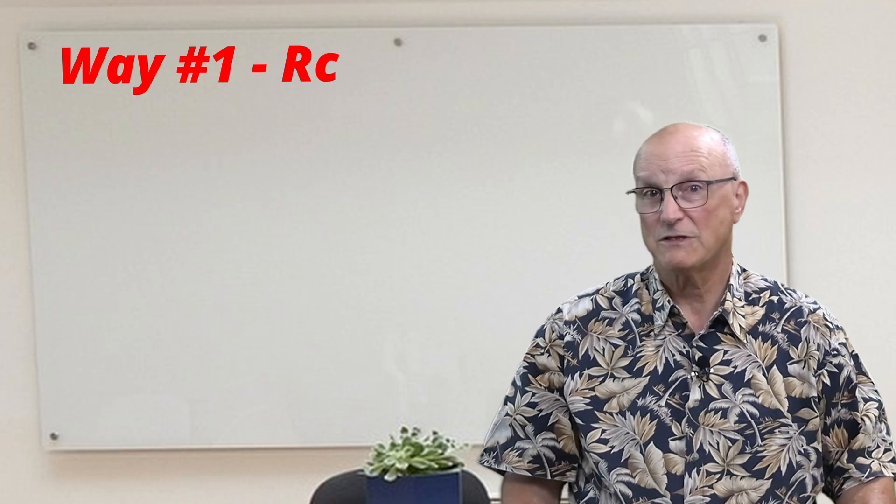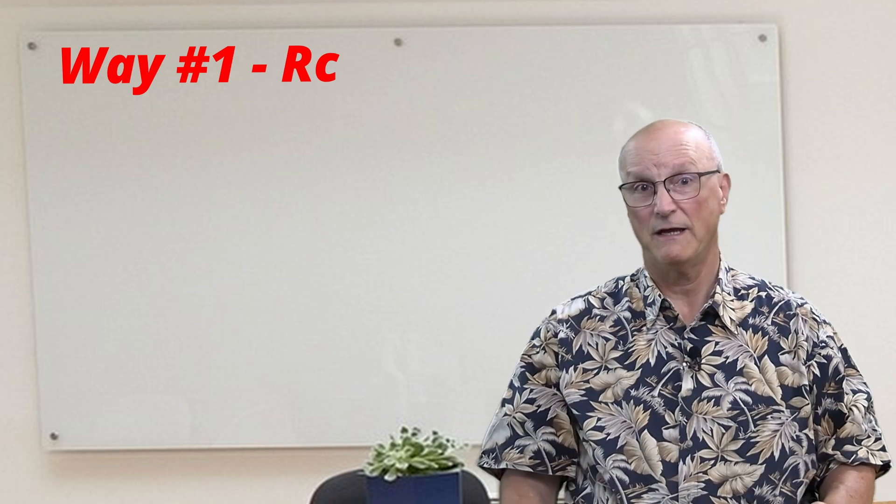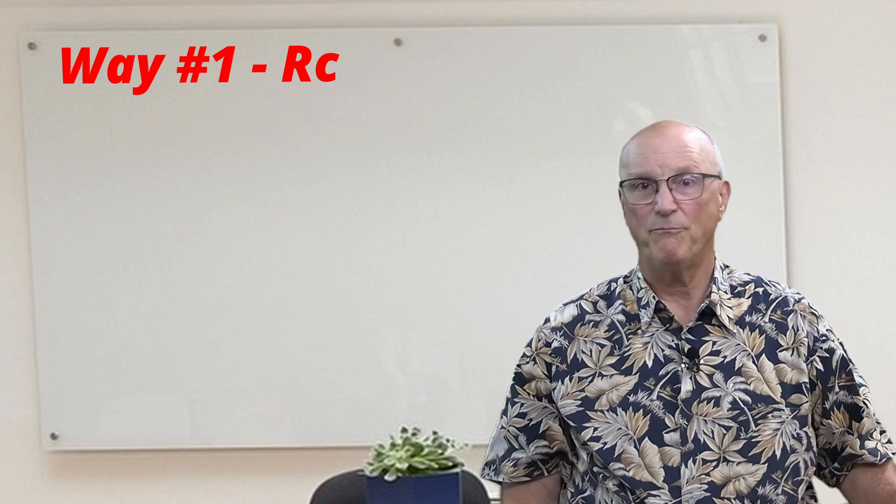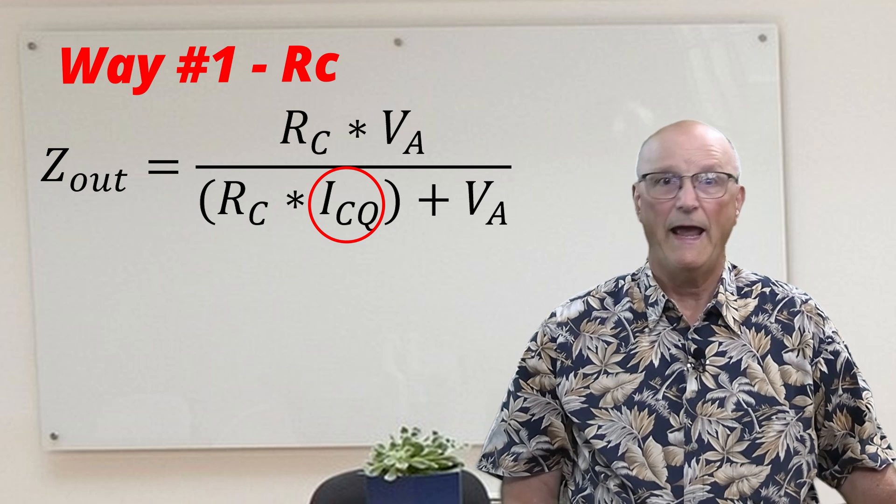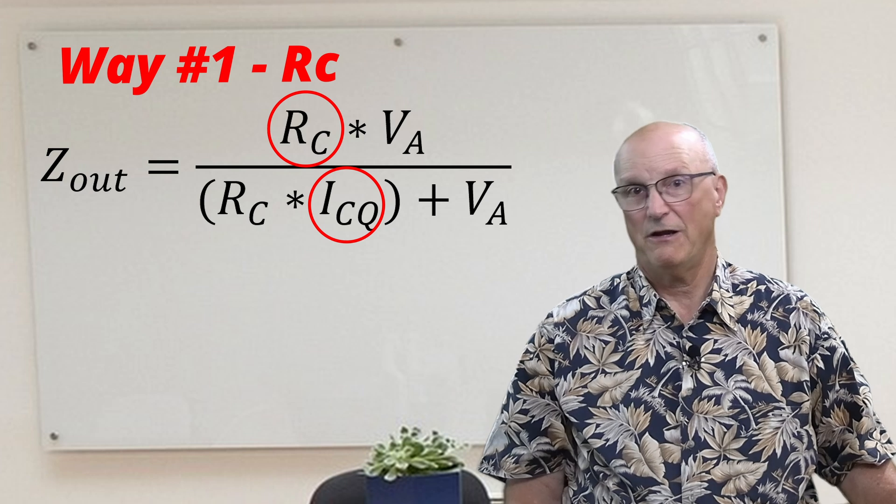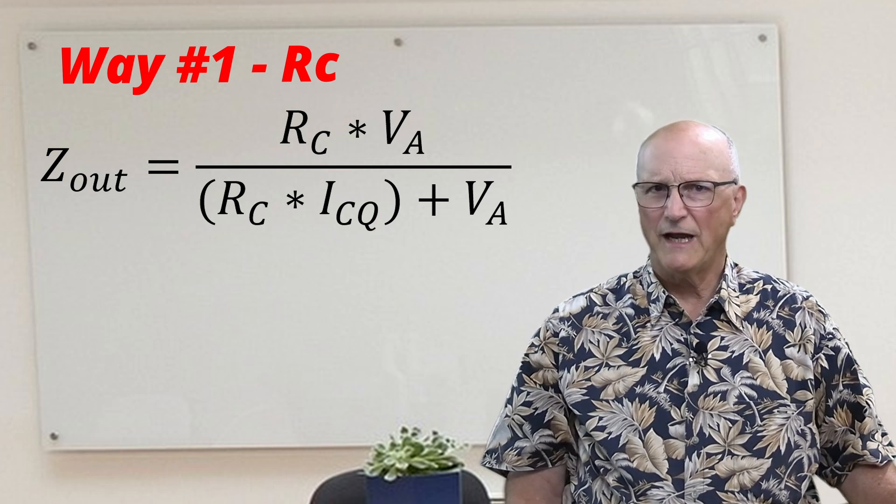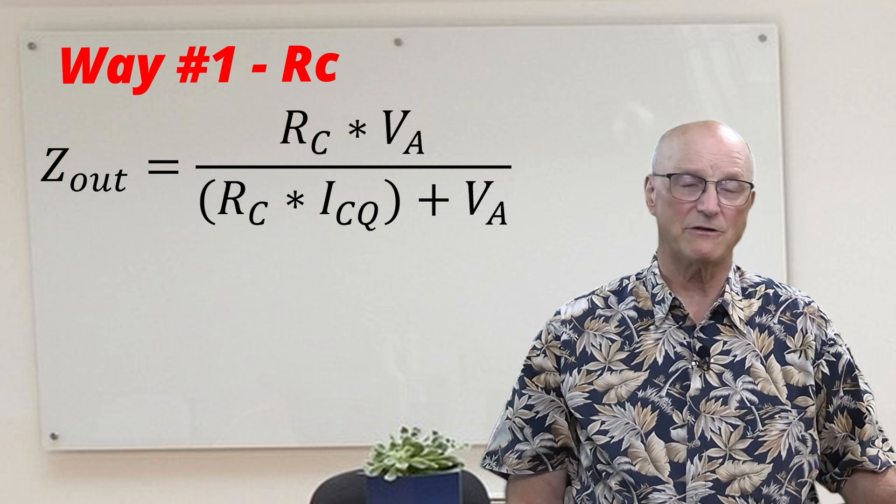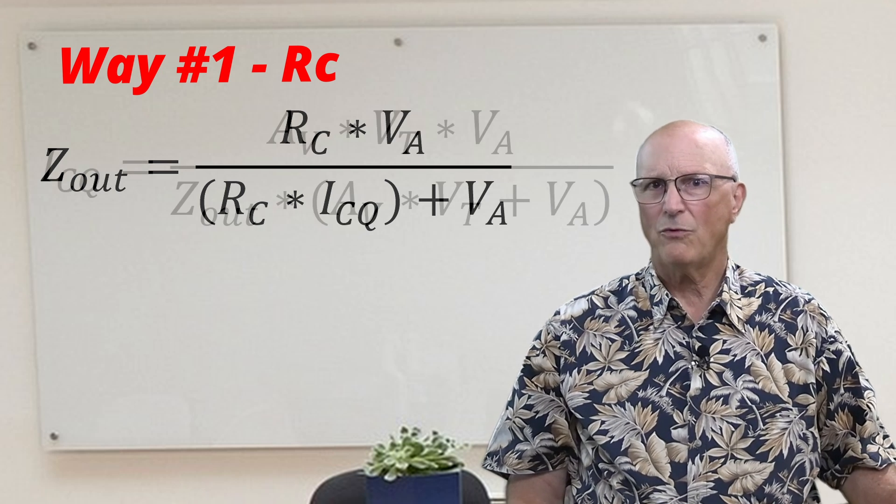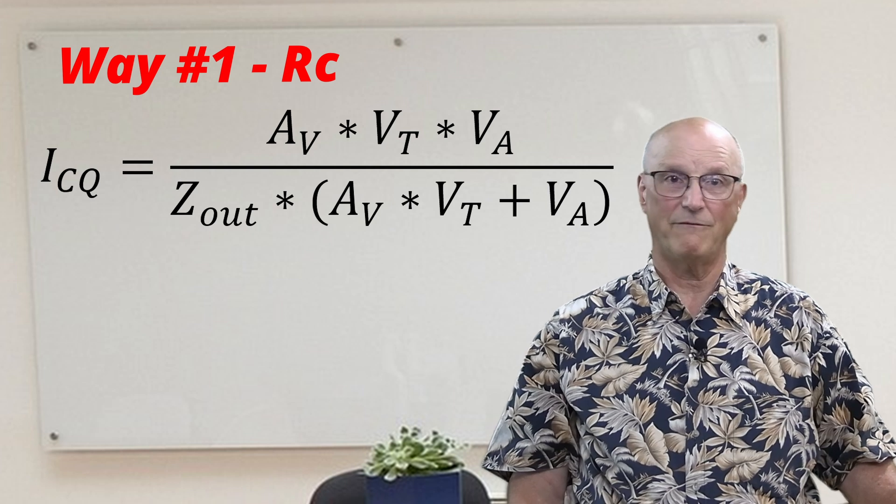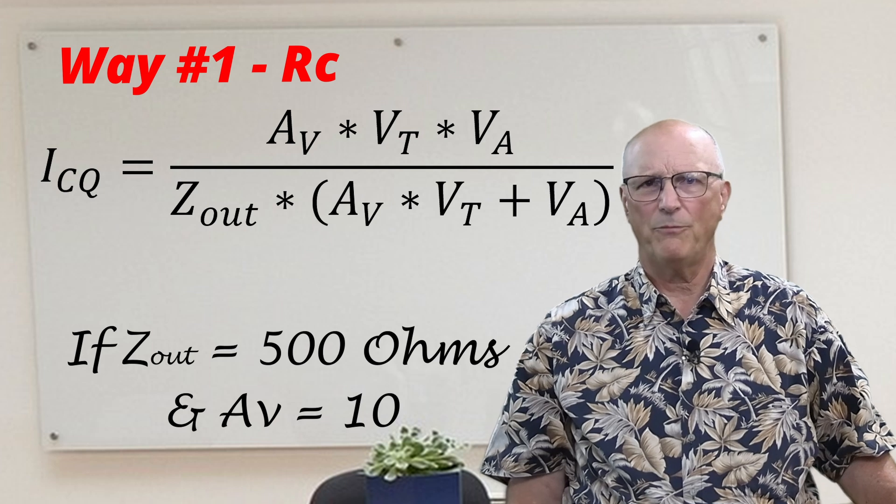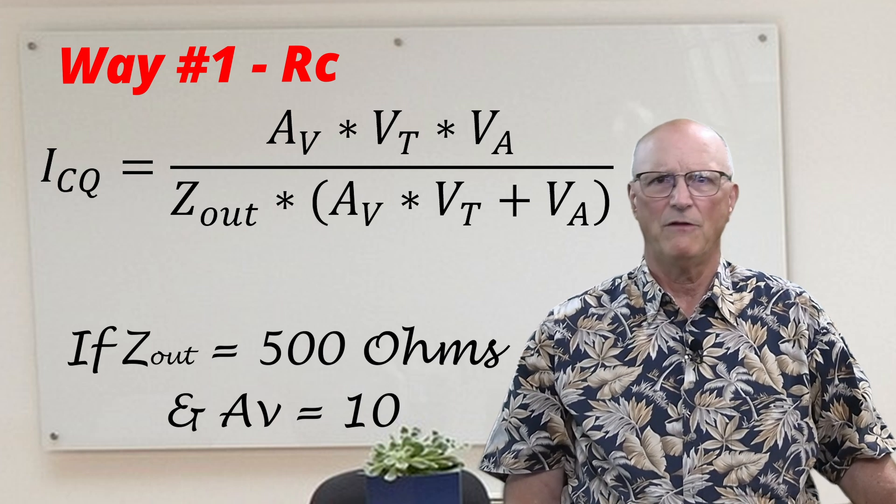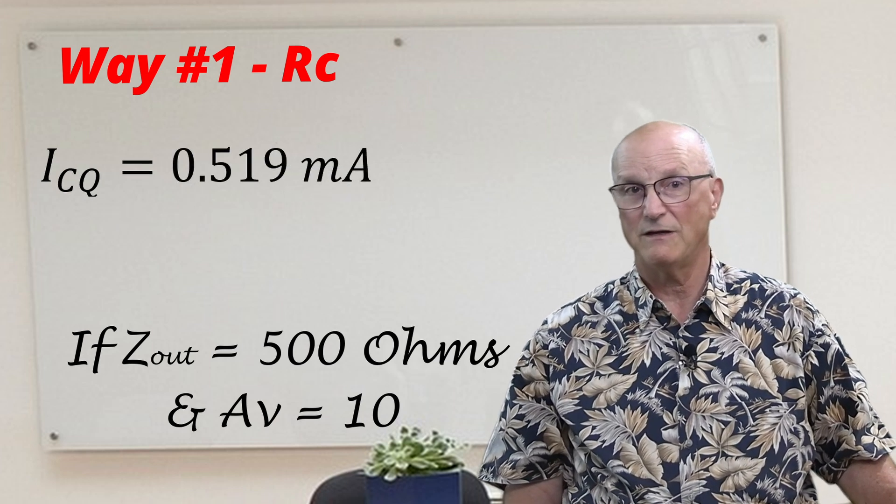But this will affect the quiescent collector voltage among many other things, and this leads to a whole bunch of design calculations. Or, you could choose a collector resistor value to provide a specific output impedance, and then calculate the required quiescent base current to achieve this. Suppose we want an output impedance of 500 ohms and a voltage gain of 10. Putting these known values into this equation, the quiescent collector current needs to be 0.519 milliamps.